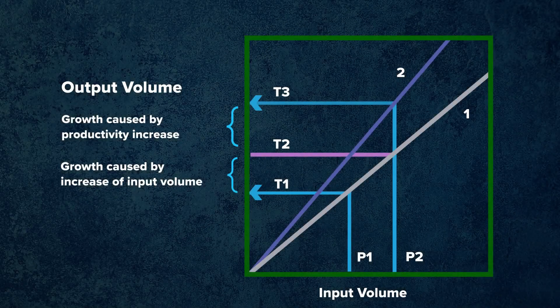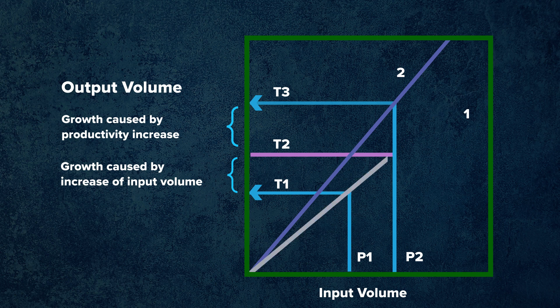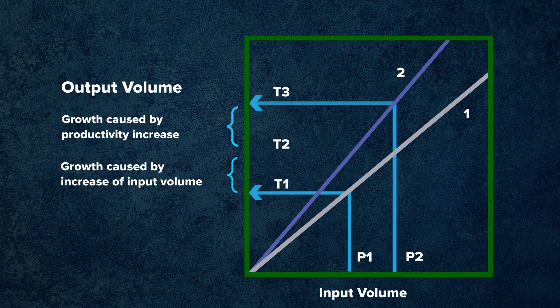The production function graphically illustrates the relationship between inputs used during the production process and the output achieved. It can also be used to show the income generation of the production process. The production function can display change in production and change in productivity. Line 1 on this chart shows how output may increase as the number of inputs employed in the production increases. At that point, P1 inputs are used to produce output of level T1. Should the production level increase requiring the use of P2 inputs, T2 level of output would be recorded.